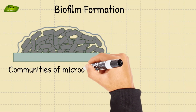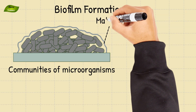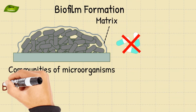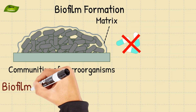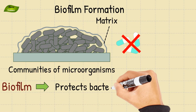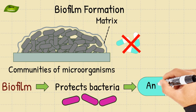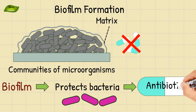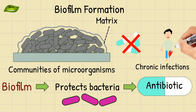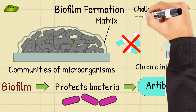Another interesting mechanism is biofilm formation. Bacteria within biofilms, which are communities of microorganisms encased in a matrix, exhibit increased resistance to antibiotics. The biofilm structure physically protects bacteria and hinders antibiotic penetration. An example of this mechanism includes chronic infections associated with biofilm formation, which are often more challenging to treat.